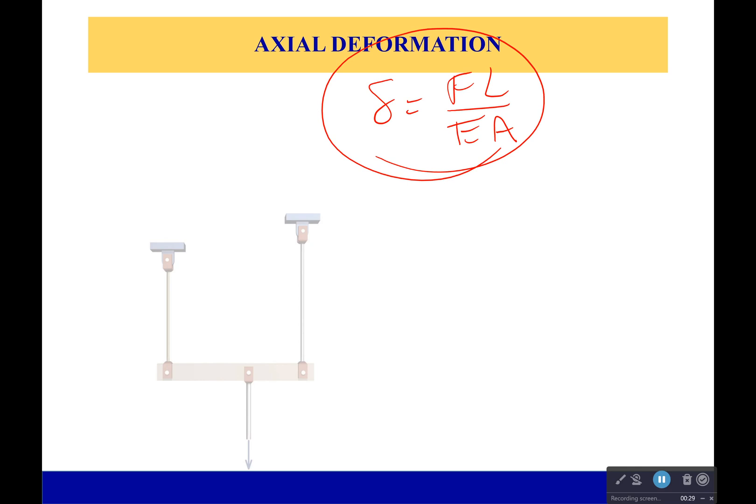Now where does this come from? Well, we have our stress is equal to strain times the elasticity. Well, let's put our equations in for stress and for strain. So force over area is equal to modulus elasticity times delta over L. If I rearrange, then I get FL/EA.